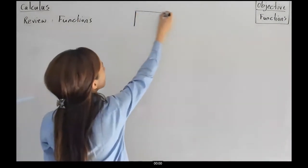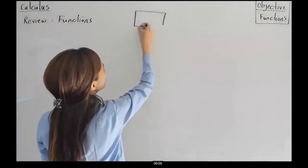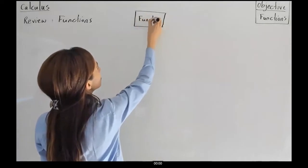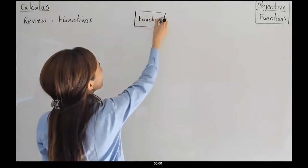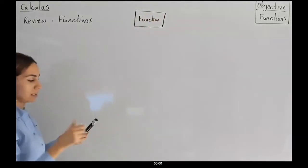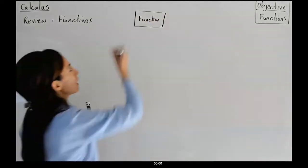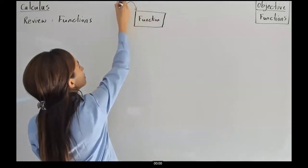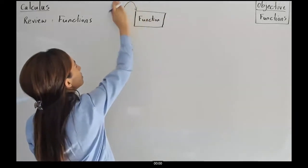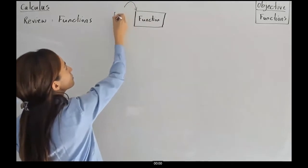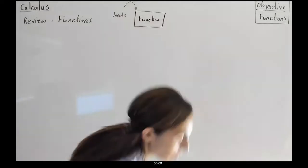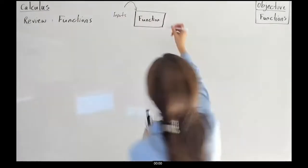So you have a function as a machine or algorithm — anything that you want to call it. It takes on some input values, X values, inputs, and it gives you some output values.